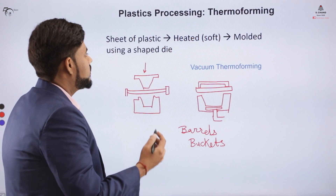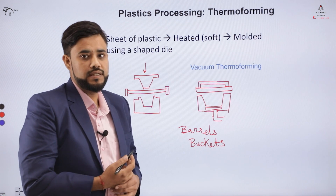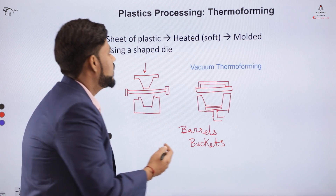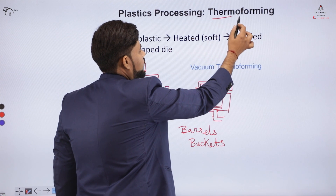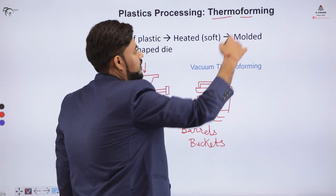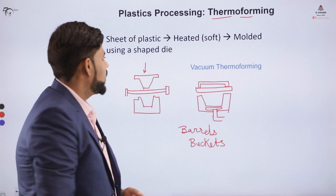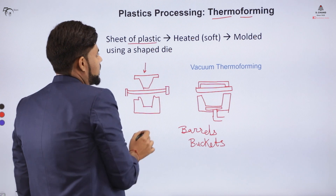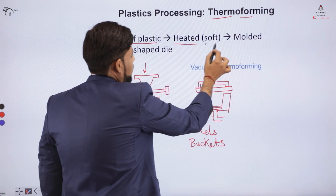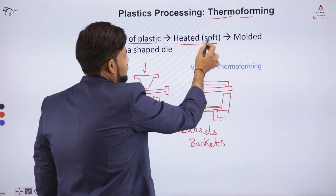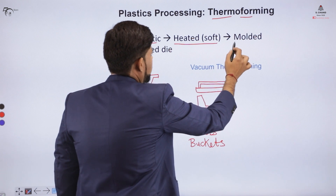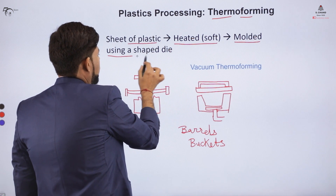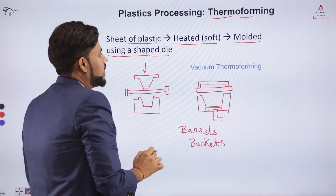In thermoforming, as you can see from the name, 'thermo' is related to heat and 'forming' refers to when you change the shape. So here you have a sheet of plastic that is heated, and ultimately a mold is used to shape the die.